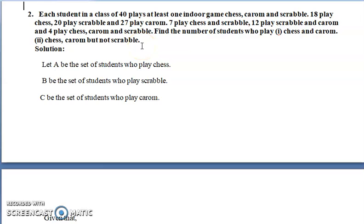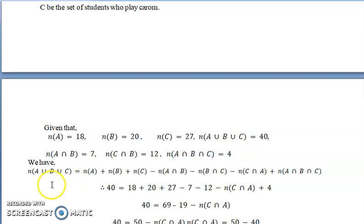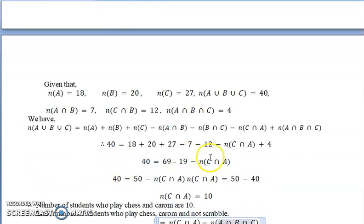Find the number of students who play chess and carom, and secondly, chess and carom but not scrabble. Since three things are given, we define: A = students who play chess, B = students who play scrabble, C = students who play carom. From the given data: n(A)=18, n(B)=20, n(C)=27, n(A∪B∪C)=40, n(A∩B)=7, n(C∩B)=12, n(A∩B∩C)=4. Using the formula for n(A∪B∪C), replace respective values — n(A∩C) is pending — and simplifying gives 10. So 10 students play chess and carom.